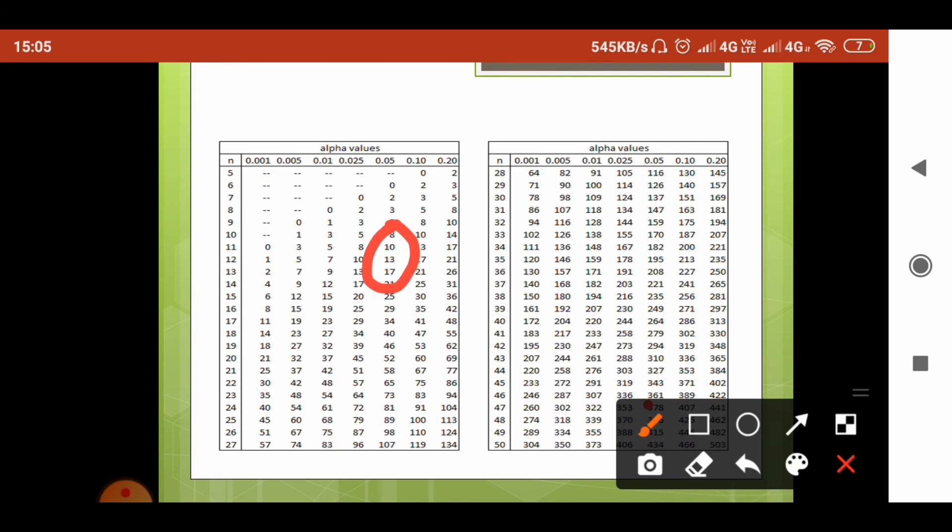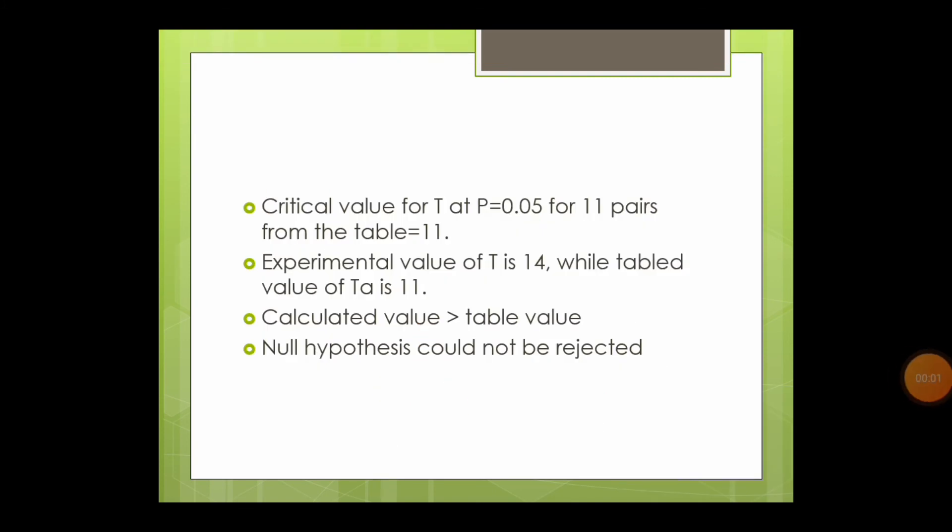Here, the observed value of T is 14, which is more than the critical value of 10. So we fail to reject the null hypothesis. It can be interpreted that there is no difference between the mean pain tolerance scores between the two paired groups, or you can say that the intervention is not effective in bringing about a change.